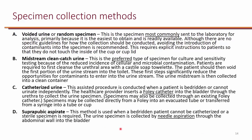There is also suprapubic aspirate, where a needle is used to go directly into the bladder and pull urine out. It's not as commonly used, but occasionally, if there's obstruction and the patient is unable to urinate but the kidneys are working and producing urine, we can go directly into the bladder. Sometimes this is done to relieve urine and sometimes to get a sample to send to the microbiology lab.